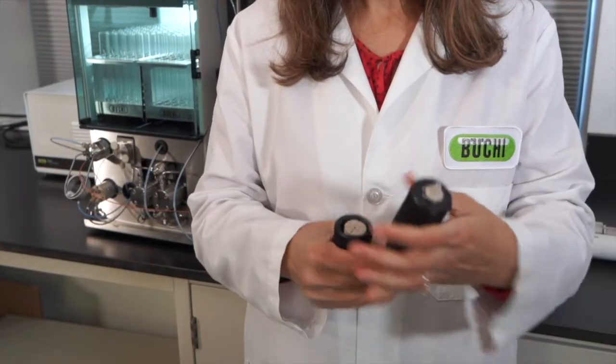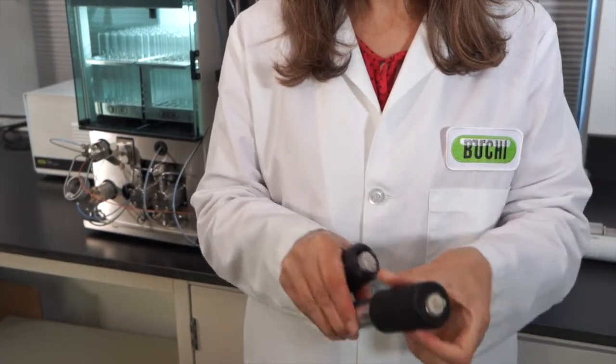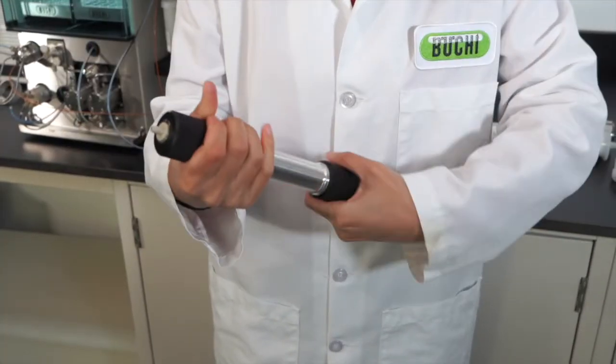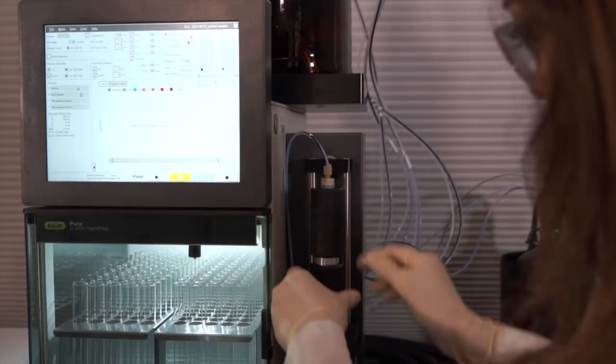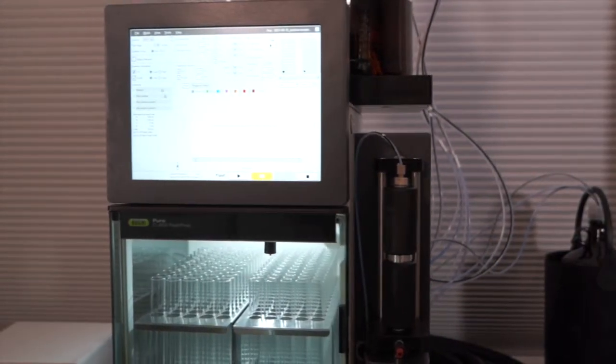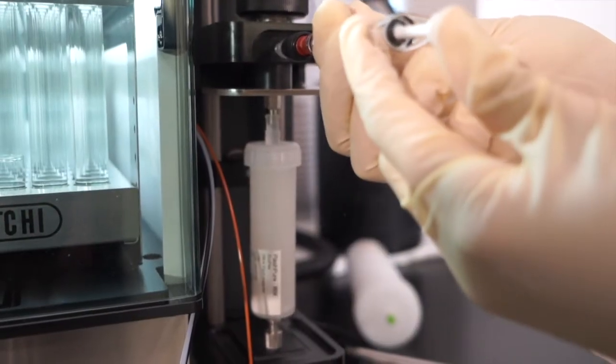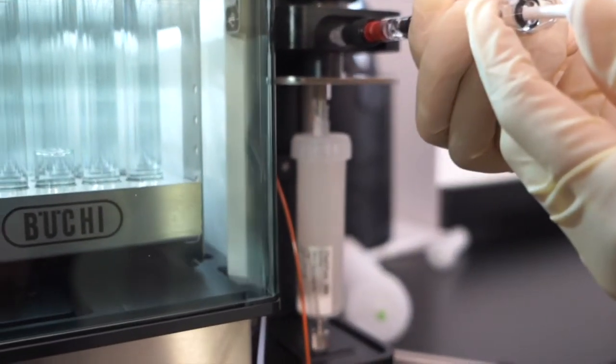For solid loading, I will use the solid loader with this pre-made sample provided by Switzerland, which is an adsorbent of silica and contains three compounds, cholesterol acetate, methylparaben, and 4-aminobenzoic acid. If I were to select liquid loading, I would inject my dissolved sample in this one-way injection port.